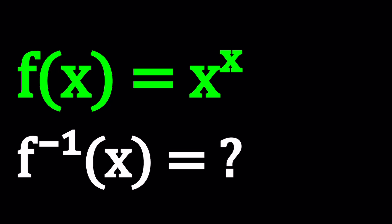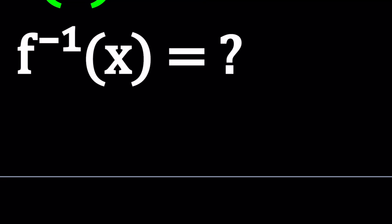So to find the inverse of x to the x, we're going to start with the following. First, we're going to set f(x) equal to x to the power x, which already is, right? And then set x to the x equal to y. From here, we're going to do the following. Since f(x) equals y, f basically maps x to y, we're going to go ahead and invert this and write it as f inverse of y equals x. Make sense? Awesome.